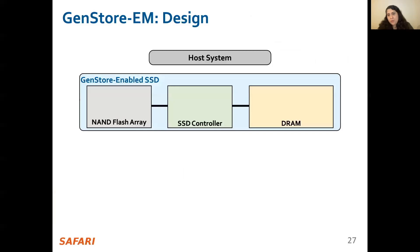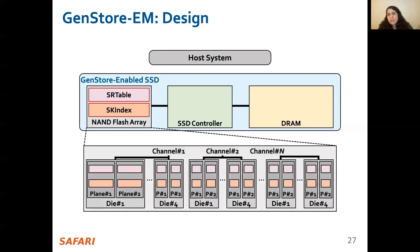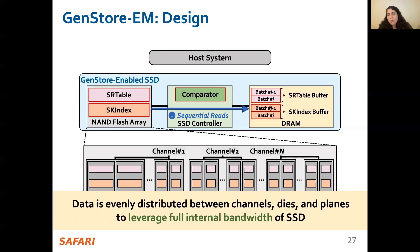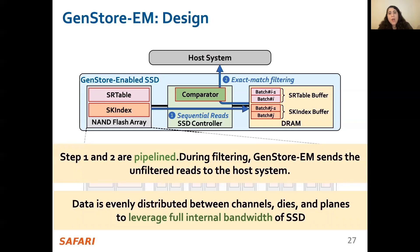Now I show the overall operation flow of GenStore EM with sorted read table and sorted K-mer index in the NAND flash memory distributed across all channels and dies, in order to leverage the full internal bandwidth of the SSD, and the comparator logic located in the SSD controller. GenStore EM consists of two steps: step one reads the two data structures sequentially from NAND flash chips to the SSD's internal DRAM in a batched manner, and step two performs exact match filtering within each batch using simple comparator logic inside the SSD. Step one and two are performed in a pipeline manner, and during filtering GenStore EM sends the unfiltered reads to the host system for full readmapping.